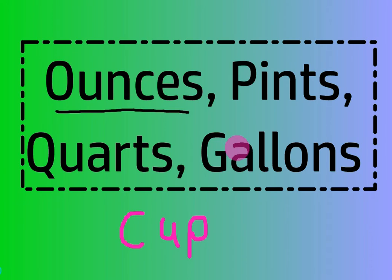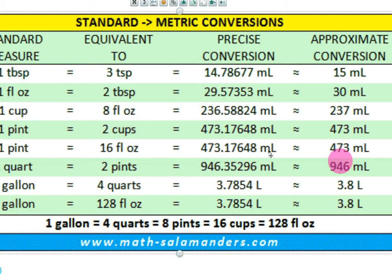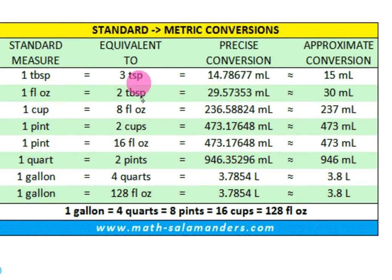You do not have to write all of this. We're not going to do any conversions right now from imperial to metric. We're just going to look at these two columns, so you need to copy these down. The smallest unit we're going to learn about in U.S. liquid units is teaspoons.